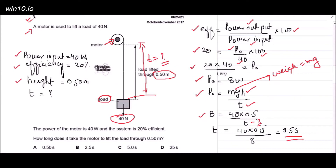That gives 2.5 seconds — that is the time used to lift the object up to 0.50 metres height. Looking at the options, option B is 2.5 seconds, and that is the correct answer.